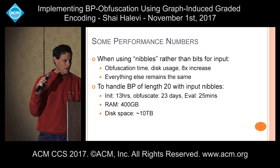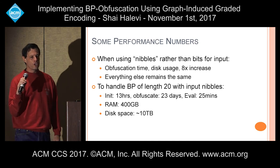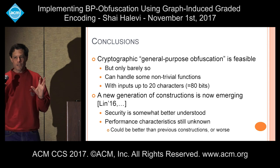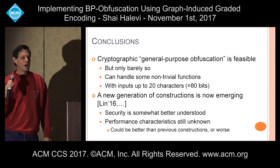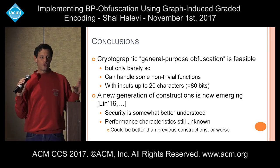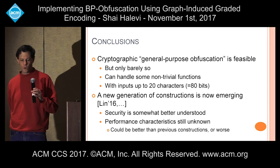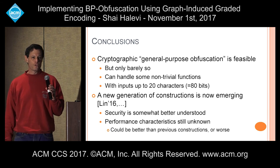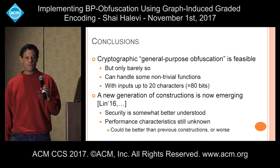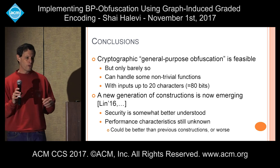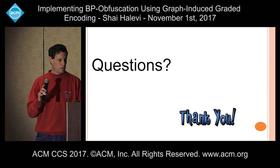Conclusions: cryptographic general-purpose obfuscation is feasible, but only barely. You can do non-trivial things — up to 20 characters, which is 80 bits — but just barely. There is a new generation of obfuscation constructions starting from the work of Rachel Lin that are emerging now; I'm not aware of anybody who has tried to implement them, and I don't know if they'll be better or worse. The security story is a little better for those — we understand their security better — but I don't know if they're feasible. And with that I'll stop.